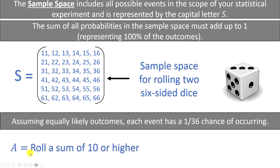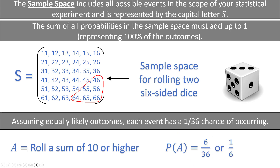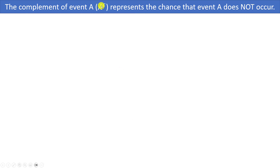Let's define event A as rolling a sum of 10 or higher. Using equally likely events, we find P(A) by counting how many outcomes have a sum of 10 or higher and dividing by 36. The outcomes are: (6,6) summing to 12; (6,5) and (5,6) summing to 11; and (6,4), (5,5), (4,6) summing to 10 — that's 6 outcomes. So P(A) = 6/36, which reduces to 1/6.